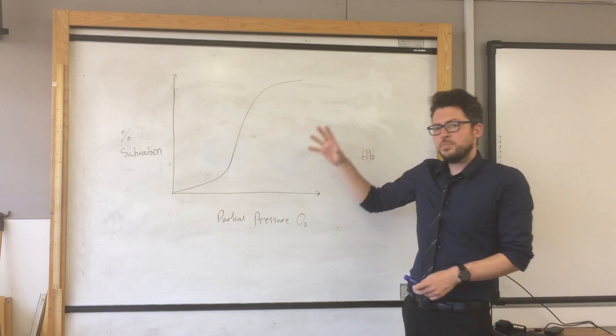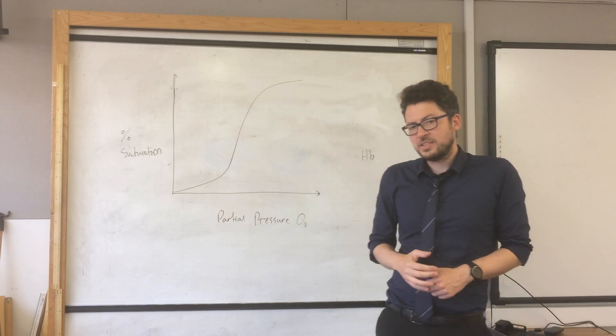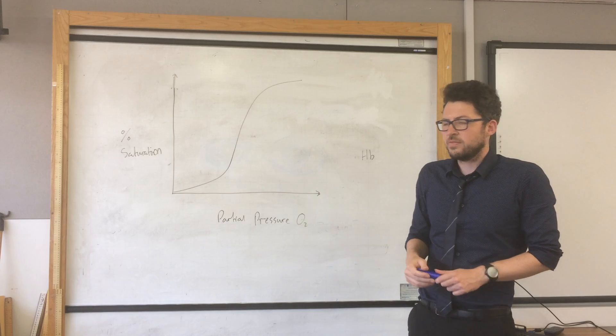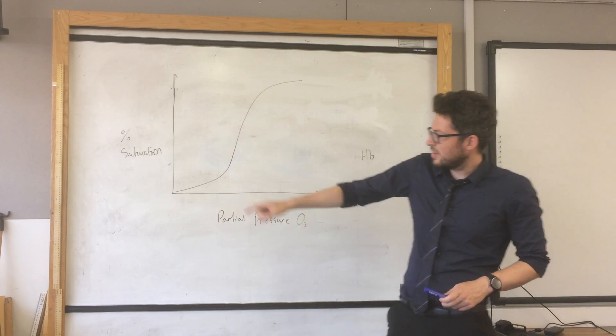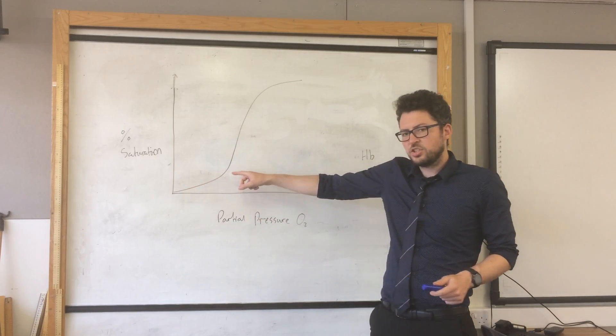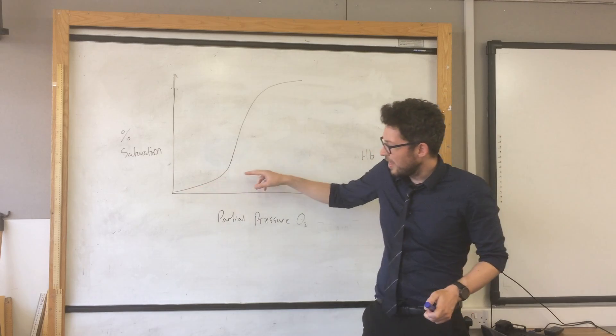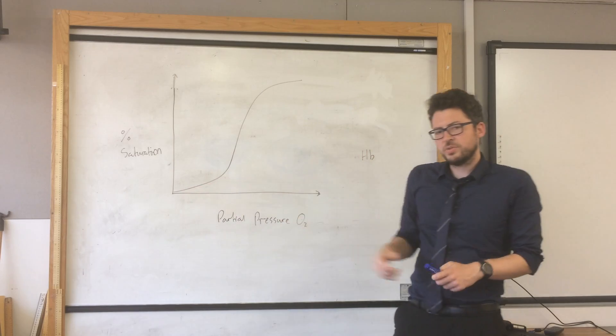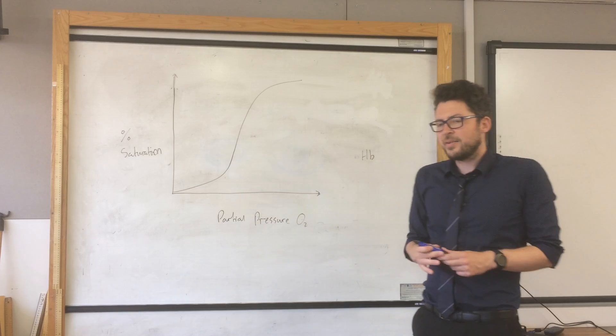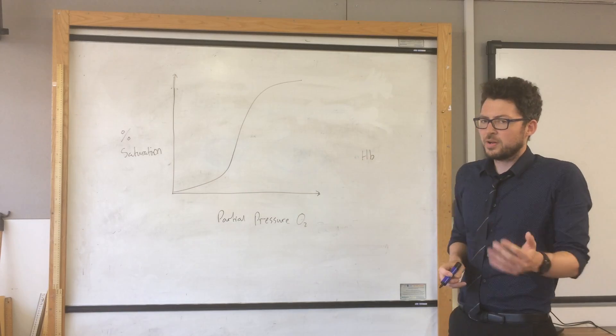So we need to know why it has this shape and we need to know the effect of a couple of things on this dissociation curve. So firstly, you can see that the actual increase in saturation is slower at the very start as the partial pressure increases. Now the reason for that is because of the structure of hemoglobin.